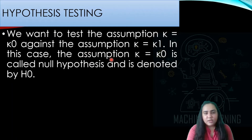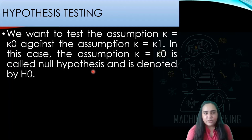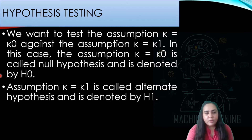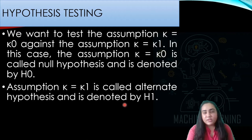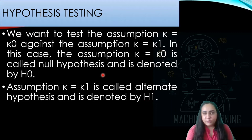The assumption that k is equal to k0 is known as the null hypothesis, and it is often denoted as H0. The assumption that k is equal to k1 is known as the alternate hypothesis, and it is often denoted as H1. So in hypothesis testing we have two hypotheses: the null hypothesis and the alternate hypothesis. The null is something that is there by default.